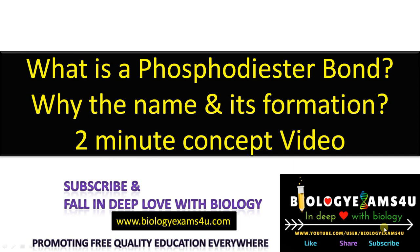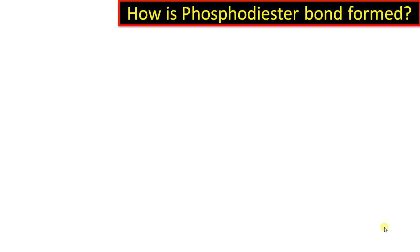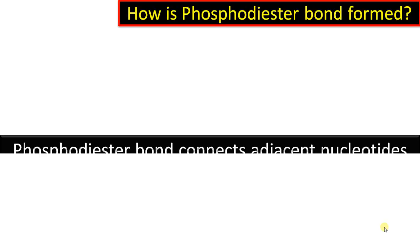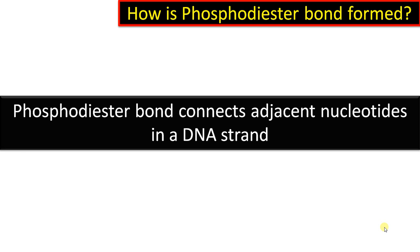Hi friends, welcome to biologyexams4u.com. Today we are having a very short video on what is a phosphodiester bond, why the name, and its formation. Let's begin with how a phosphodiester bond is formed. As we all know, a phosphodiester bond is a bond that connects adjacent nucleotides in a DNA strand.